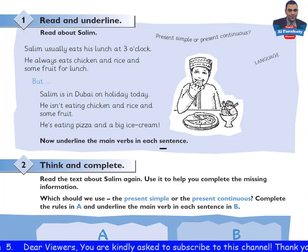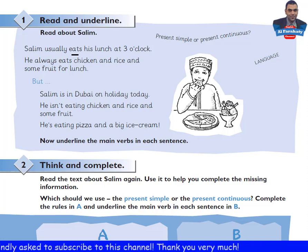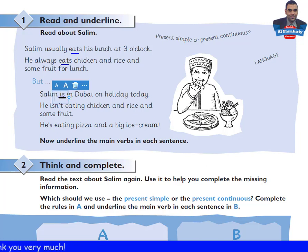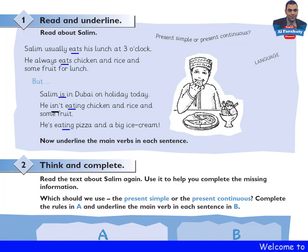Hello again. The main verb in the first sentence is 'eats', and here again 'eats'. The main verb here is 'is', and here we have 'eating'. Also we have auxiliary verbs or helping verbs: 'is' and 'isn't'. Now let's go to activity 2.